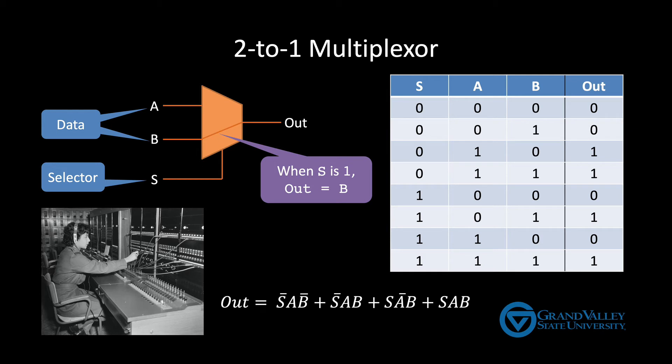This circuit is called a two to one multiplexer or MUX for short. The two to one means that it takes two inputs and selects one of them to place on the output wire. This circuits also sometimes called a selector. We'll discuss multiplexers in general in another video.